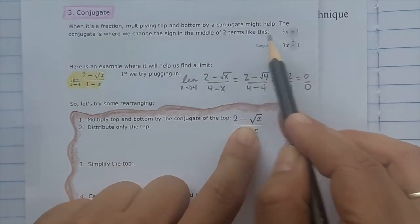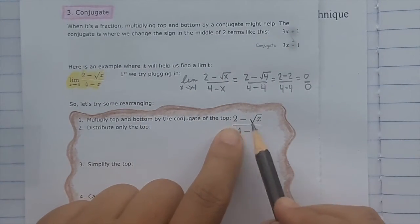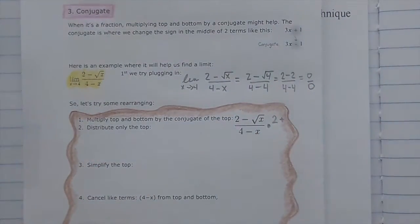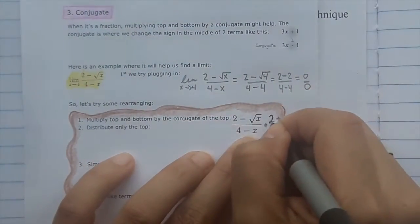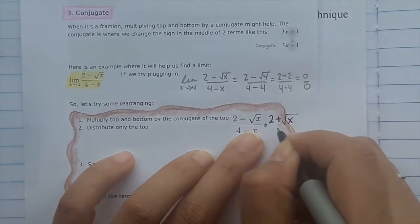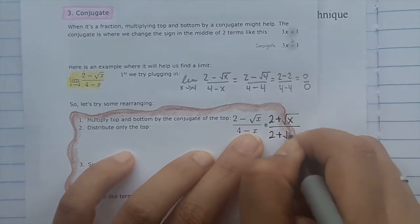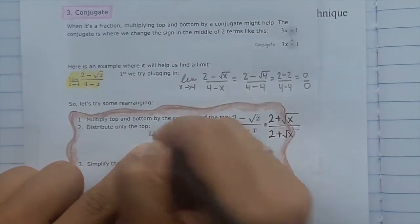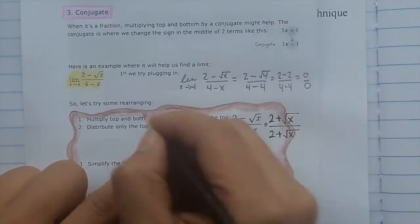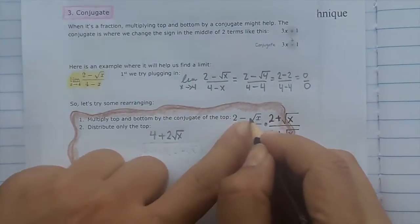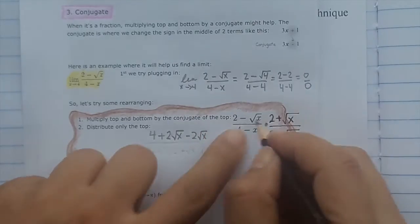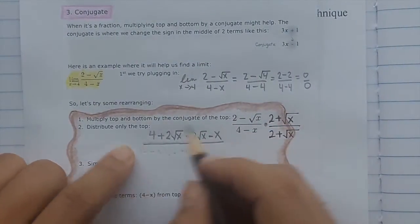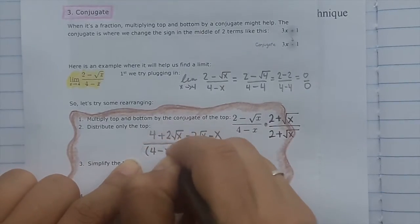Multiplying top and bottom by the conjugate, we just change the sign between the two terms. So we multiply top and bottom by (2 plus the square root of x). Now distribute the top: 2 times 2 is 4, 2 times radical x is 2 radical x, negative radical x times 2 is negative 2 radical x, and radical x times radical x is just x — whatever is inside the radical.